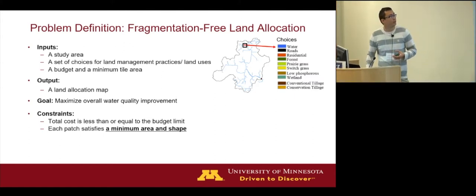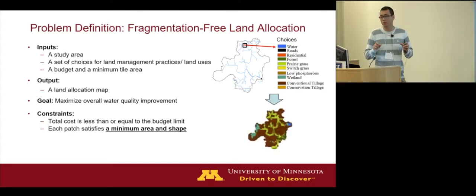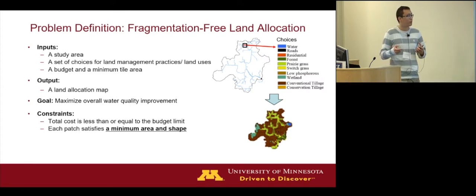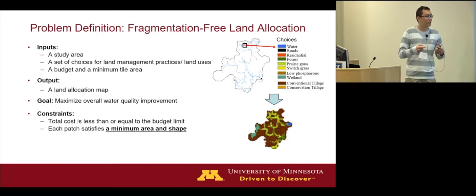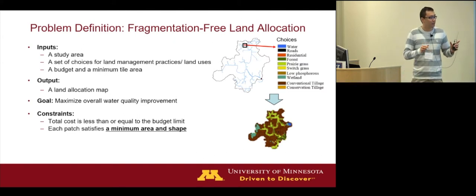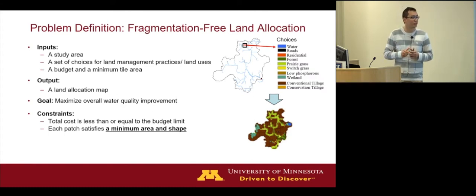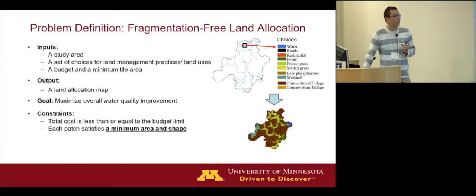The goal is to find a land allocation map that maximizes overall water quality improvement in the watershed, or similarly other objectives. The first constraint is that total cost must be less than or equal to the budget limit, which could represent food production loss. We also guarantee each patch satisfies a minimum area so that it's contiguous and large enough for farm equipment operation, with a regular shape for practicality.